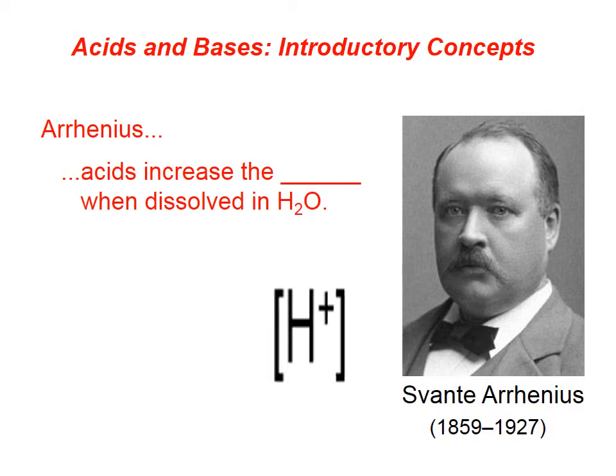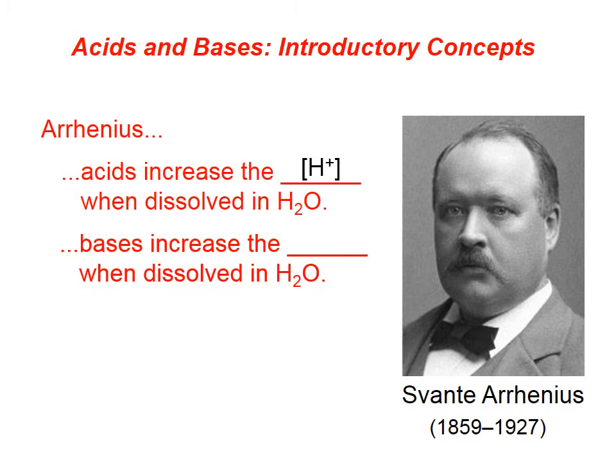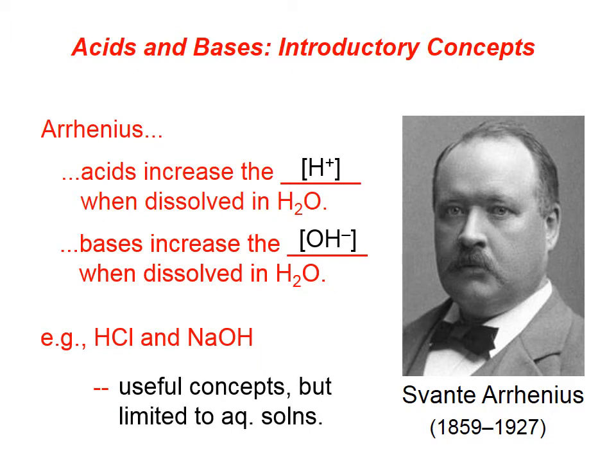Arrhenius acids increase the hydrogen ion concentration when dissolved in water. Arrhenius bases increase the hydroxide ion concentration when dissolved in water. For example, HCl is an Arrhenius acid because the H+ ion concentration increases whenever you dissolve HCl in water. Similarly, NaOH is an Arrhenius base because it increases the hydroxide ion concentration when dissolved in water.